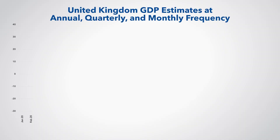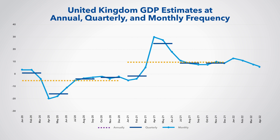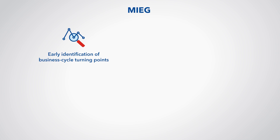The difference between quarterly and monthly indicators in terms of the additional information provided by the higher frequency is illustrated by this chart showing the annual, quarterly, and monthly measures of GDP published by the Office for National Statistics of the United Kingdom. We see that the monthly data allow much more precise timing of the pandemic-related downturn in 2020, which occurred primarily in March and April. The monthly data show that by June the economy had turned up, while the quarterly data don't show the upturn until the third quarter. The MIEG can be used to provide early identification of business cycle turning points.